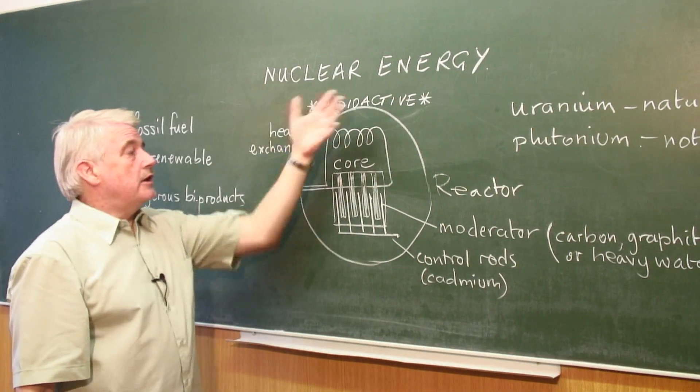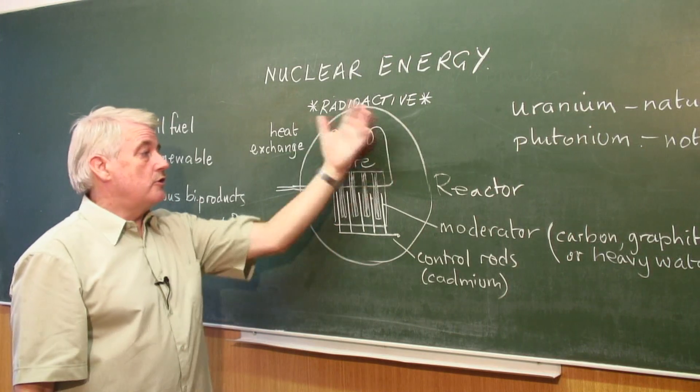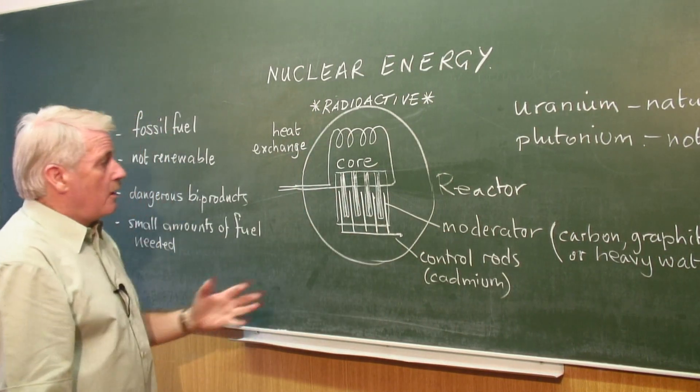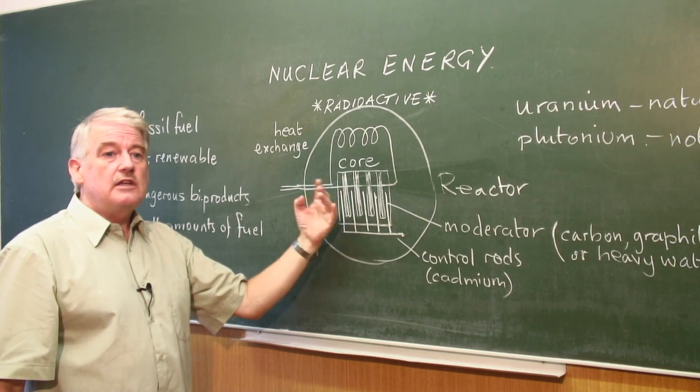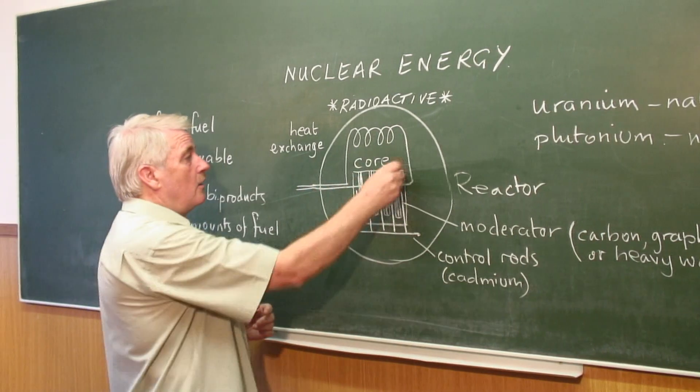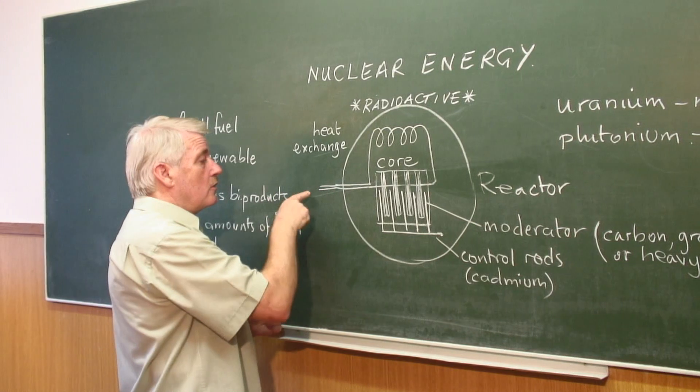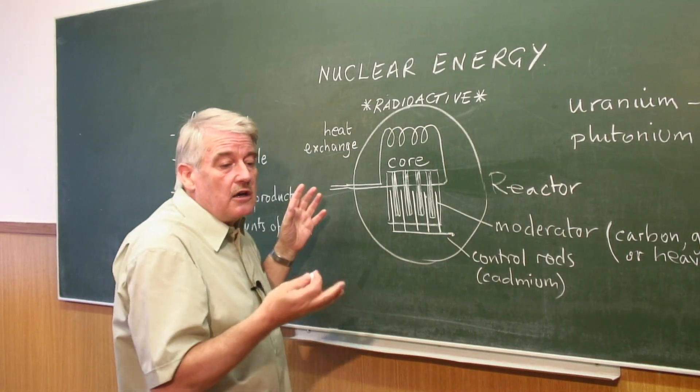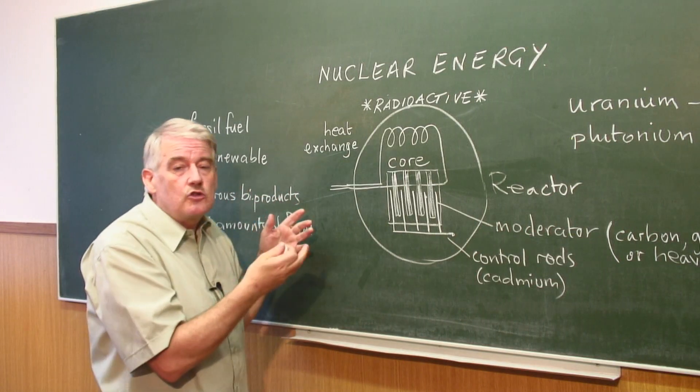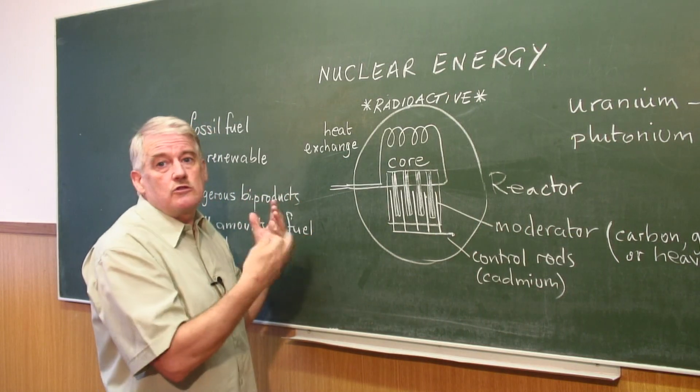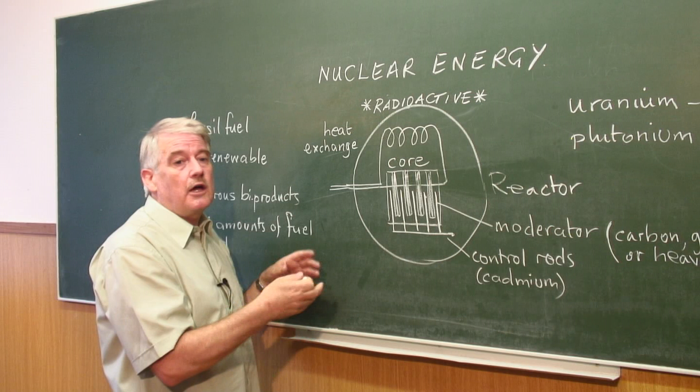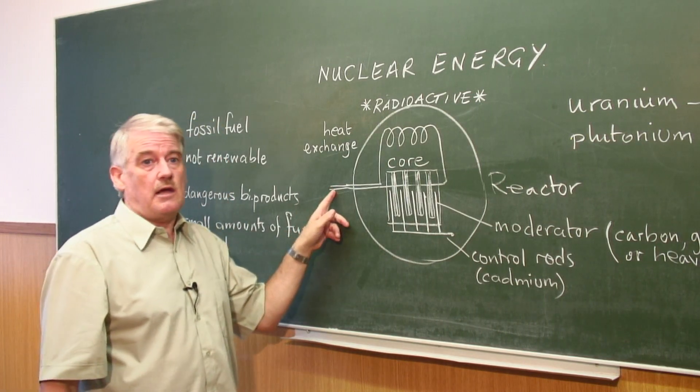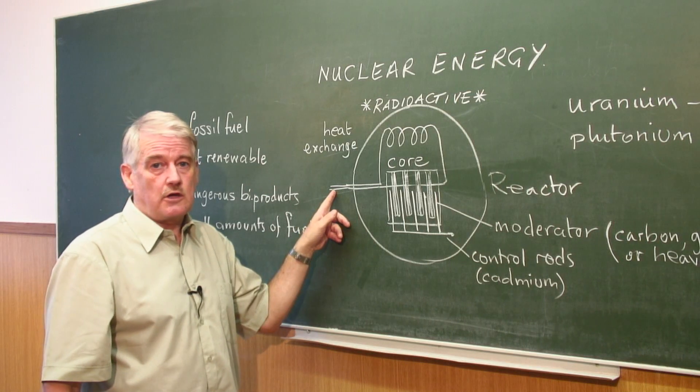All a nuclear power station does or a nuclear reactor does is produce heat. What we then have to do is take the heat away, and once we've taken it away, we can take it away and turn it into steam, which can drive a turbine, which drives a generator. This is exactly the same as in a conventional power station.